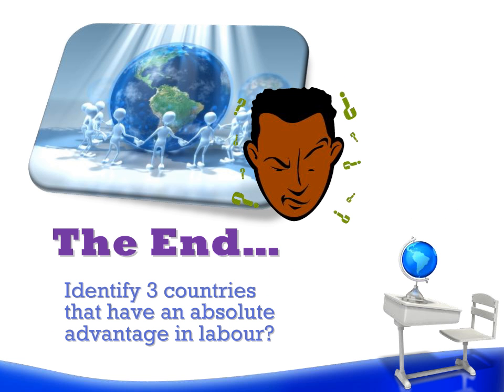Consider this: identify three countries that have an absolute advantage in labour. If they have such an absolute advantage in labour, what should we trade with them, and with whom? All these considerations are what the Canadian government takes into account every single year when they strike up trade relationships with countries, and businesses do the same. It's about figuring out who has the lower opportunity costs. Countries with an absolute advantage in labour definitely have lower opportunity costs than we do, so we should try to identify those countries. Make sure your notes are in order and have your discussion questions for tomorrow.